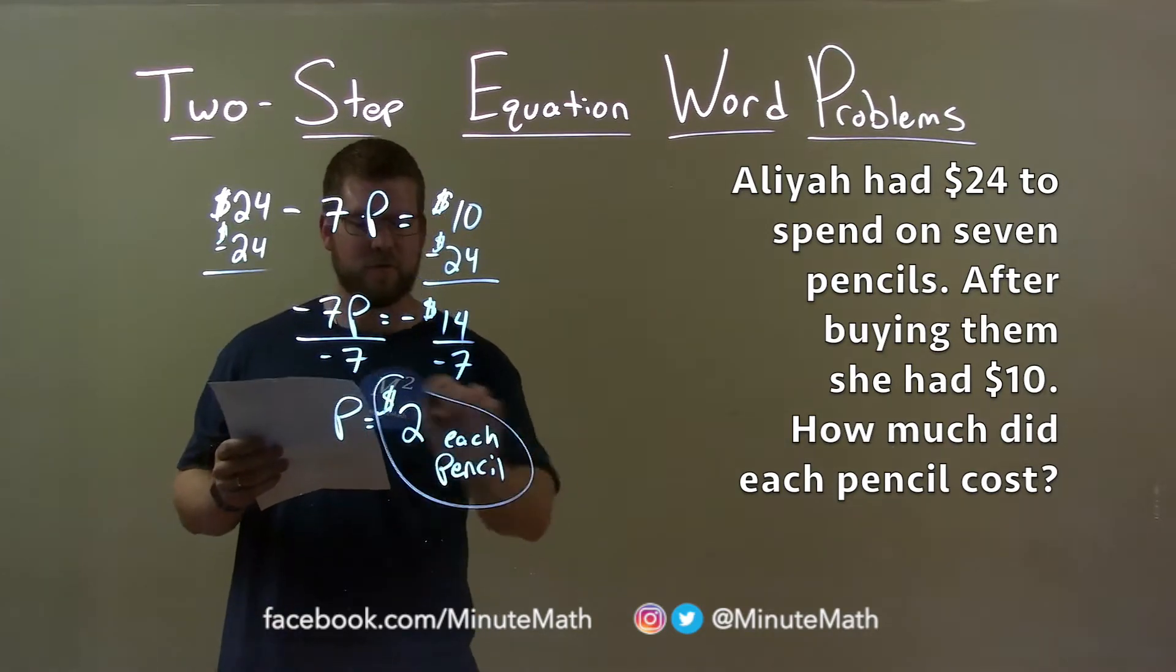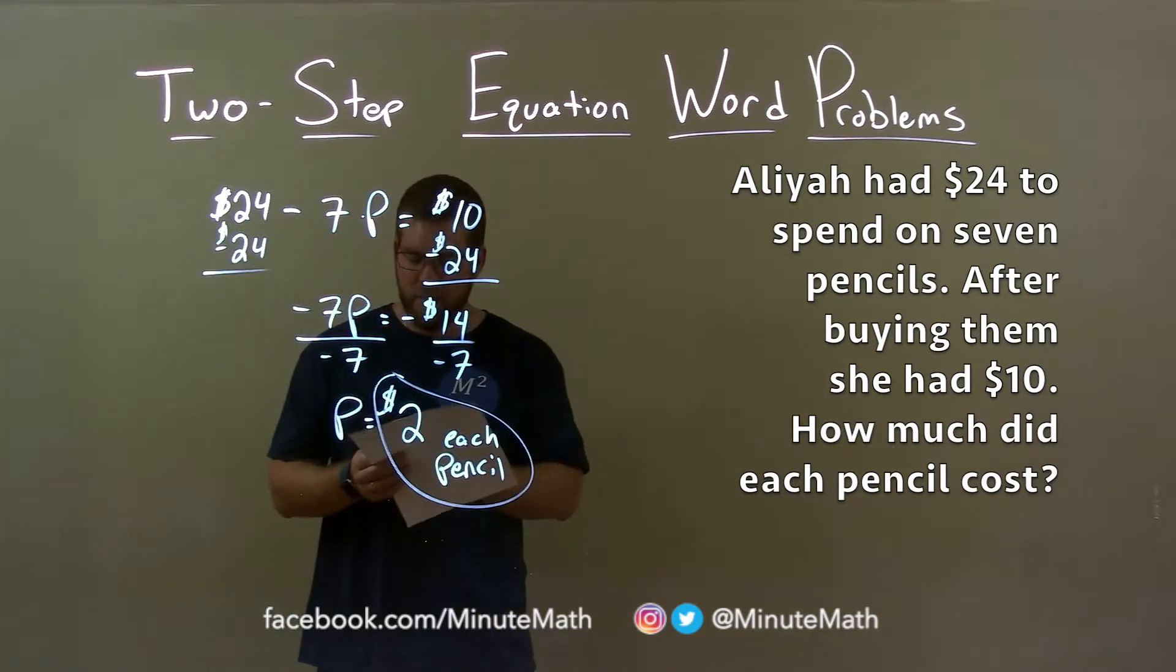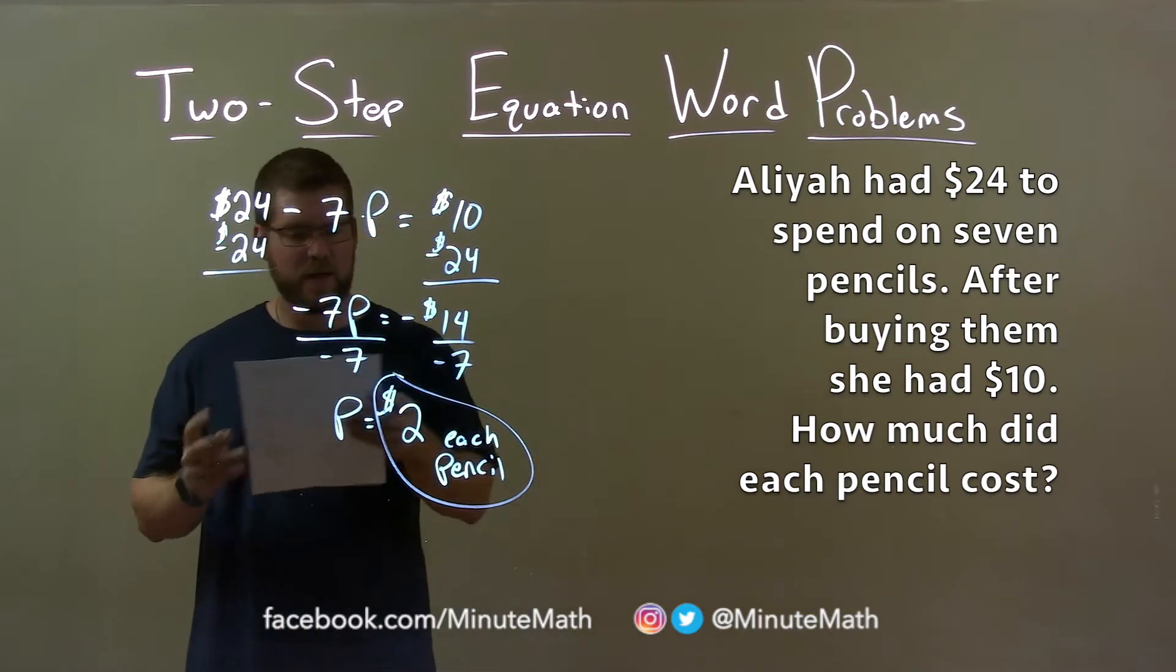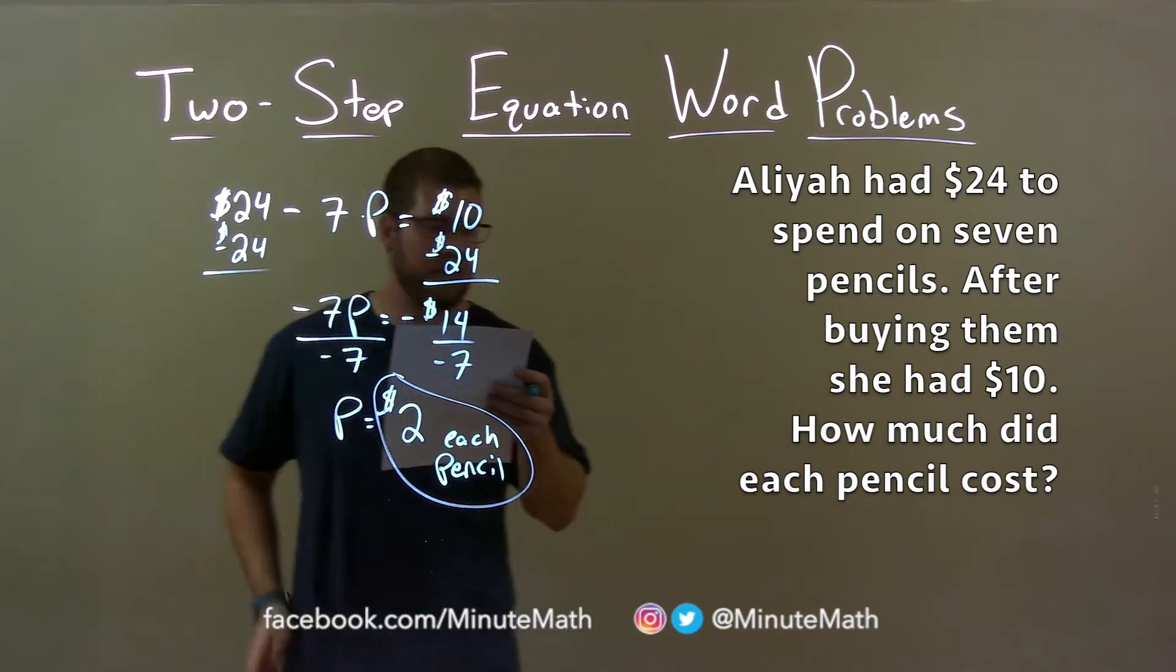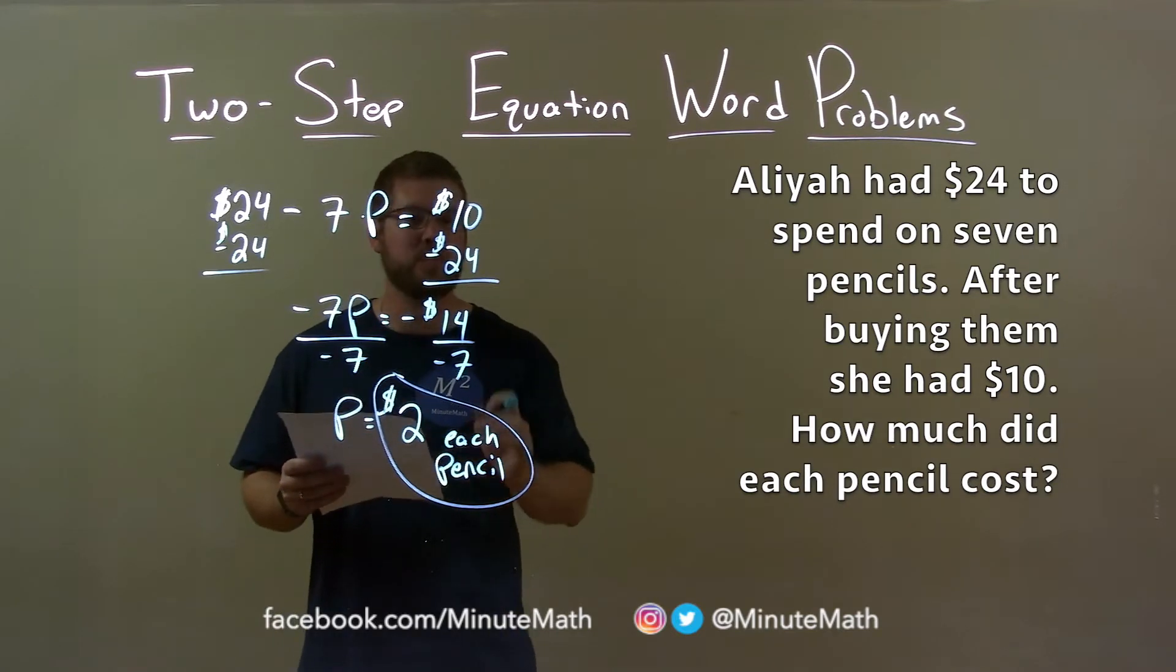And there we have our final answer. So, quick recap. We're given the word problem: Aaliyah had $24 to spend on 7 pencils. After buying them, she had $10. How much did each pencil cost?